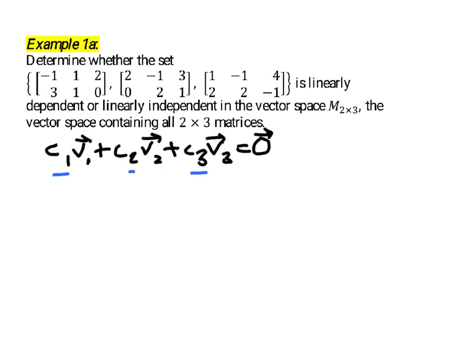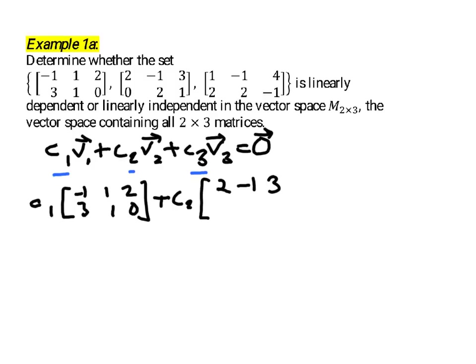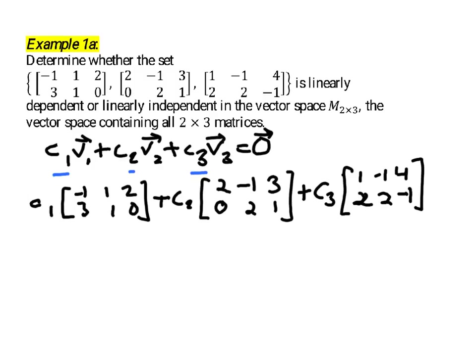To determine whether this collection of matrices is linearly independent, we need to look for a solution to that equation. So I'd set this up with C1 times the first matrix plus C2 times the second matrix plus C3 times the third matrix, equal to the zero matrix.